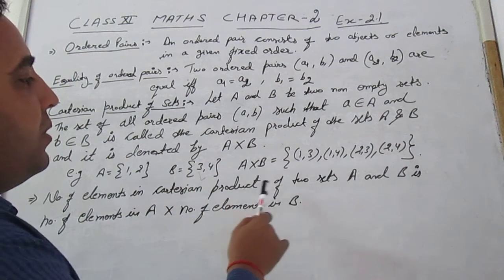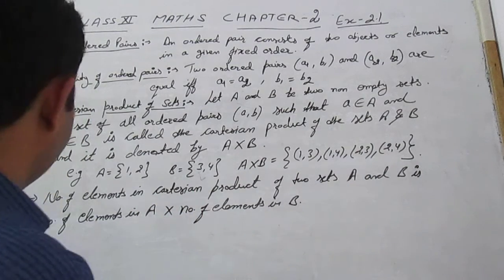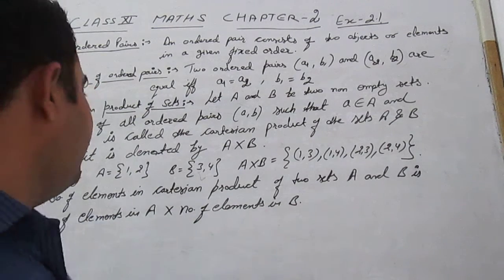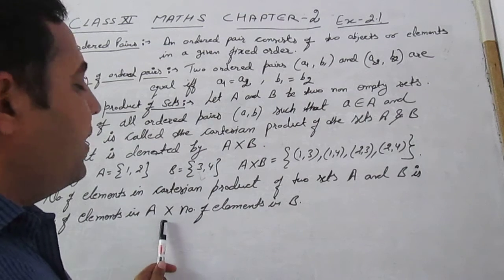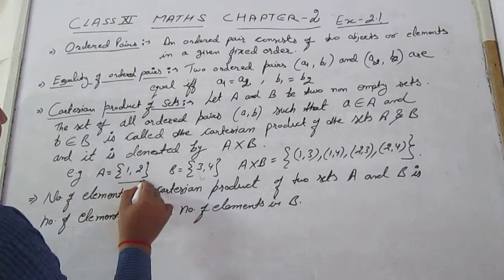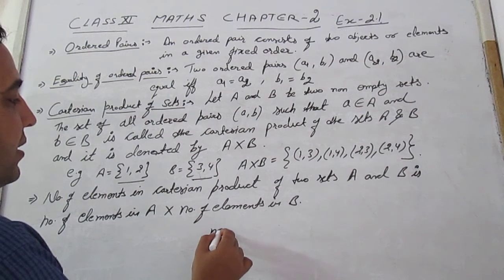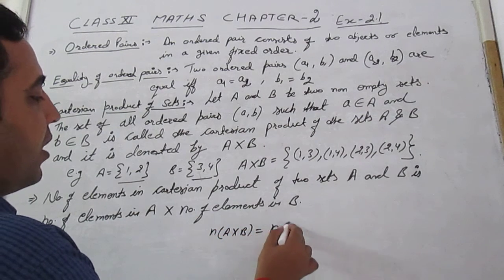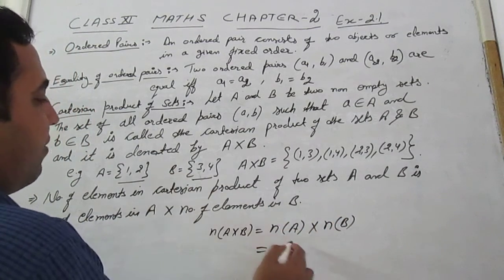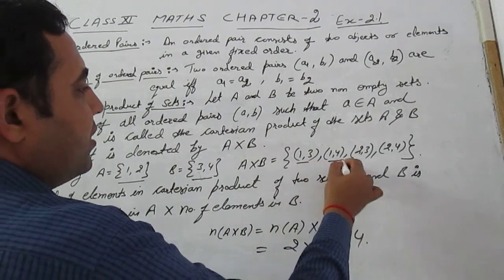Then A cross B is given by {(1,3), (1,4), (2,3), (2,4)}. The number of elements in the Cartesian product of two sets A and B equals the number of elements in A multiplied by the number of elements in B. Here A has 2 elements and B has 2 elements, so A×B has 4 elements — we can count: one, two, three, four.